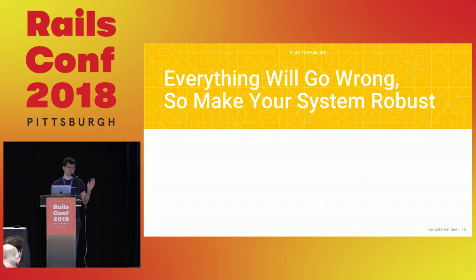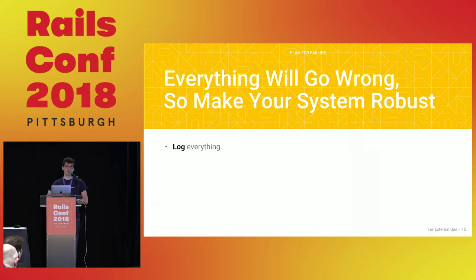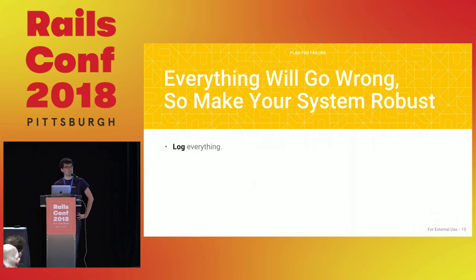Everything will go wrong, so make your system robust. Number one: log everything. Every time you connect to an FTP server, log that interaction. Every time you disconnect, log that. Every time you see a new file in an FTP folder, log the file name and time. Every time you drop a file off, log the time and date. This will help you immensely with debugging and help you figure out periods of problems versus relative stability. Logging everything is cheap and easy.